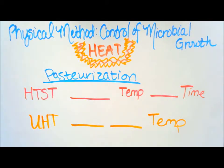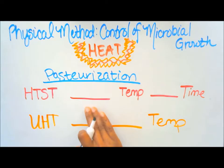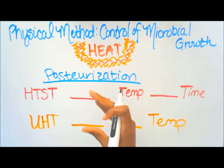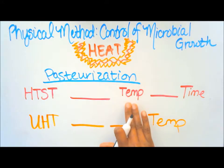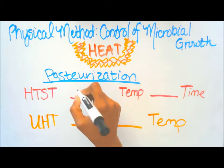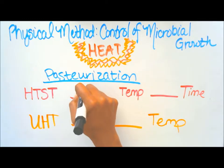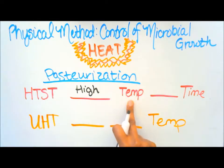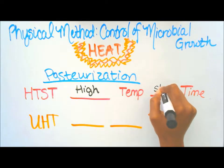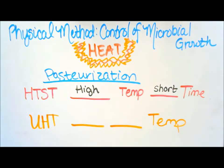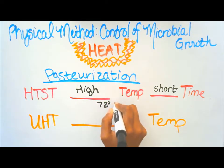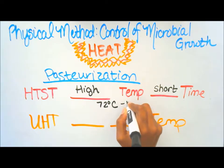This is the second part of the study section covering pasteurization — specifically the temperature and time needed to kill bacteria. HTST stands for high temperature short time. You need a high temperature at a short amount of time: 72 degrees Celsius at 15 seconds.